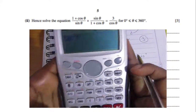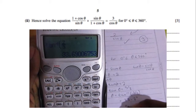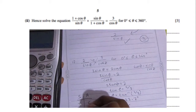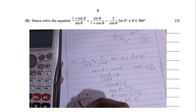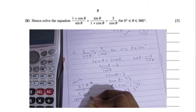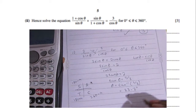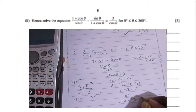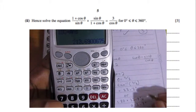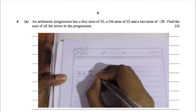Taking the inverse: θ = tan⁻¹(2/3) = 33.7°, rounded to three significant figures. Using the ASTC diagram — All, Sine, Tan, Cosine — tan is positive in the A (all) and T (tan) quadrants. So θ = 33.7° and θ = 180° + 33.7° = 213.7°. That's three marks total.